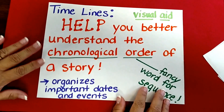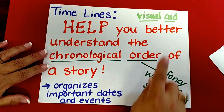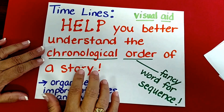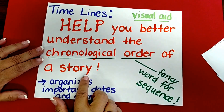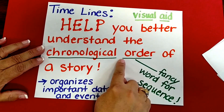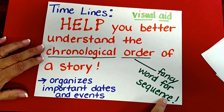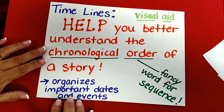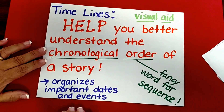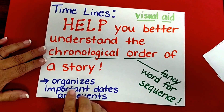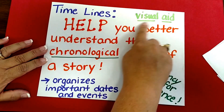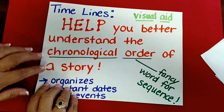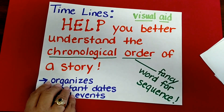Timelines are visual aids and they help you understand the chronological order of a story. Chronological order is just a fancy word for sequence, and it also helps you organize important dates and events that happen in a story. Visual aids are always helpful when you're trying to figure out information.